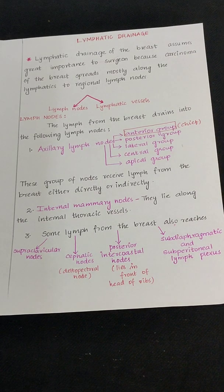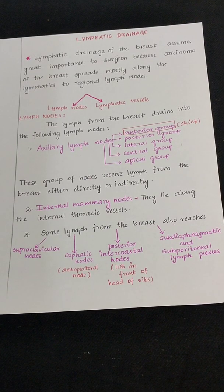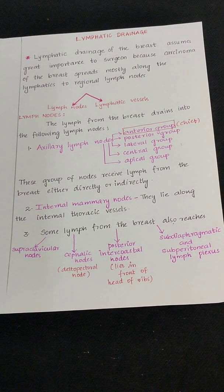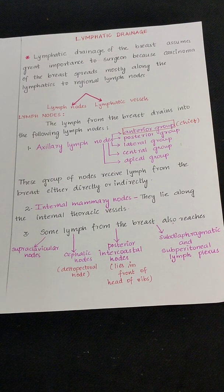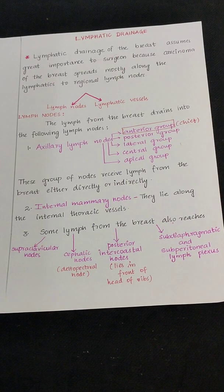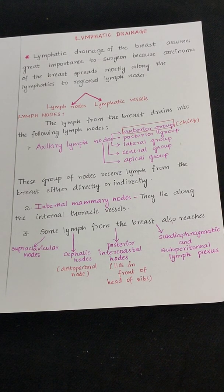Now let's move on to the lymphatic drainage of the breast. The lymphatic drainage assumes great importance to surgeons because carcinoma of the breast spreads mostly along the lymphatics to regional lymph nodes. The lymphatic drainage happens through two ways: lymph nodes and lymphatic vessels. The lymph from the breast drains into the following lymph nodes.